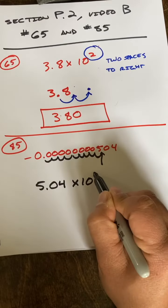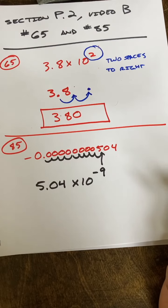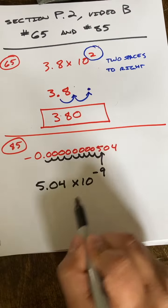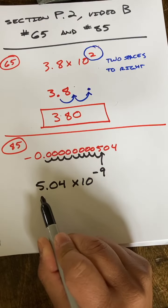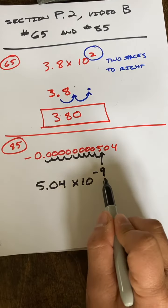Times 10 to the power negative nine. Okay, because I've taken my very small number and I'm expressing it as a kind of large 5.04, I need to multiply by 10 to the negative...